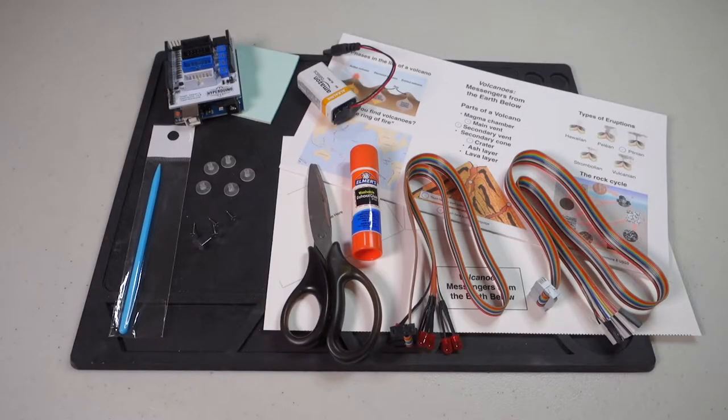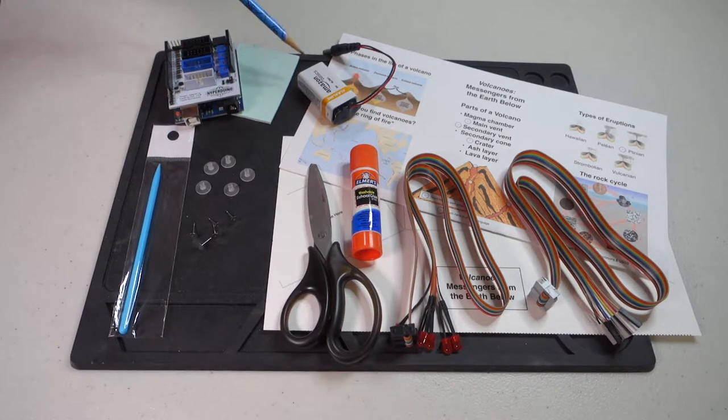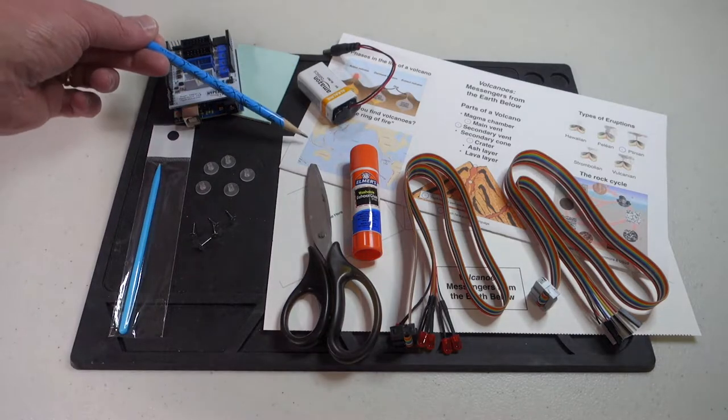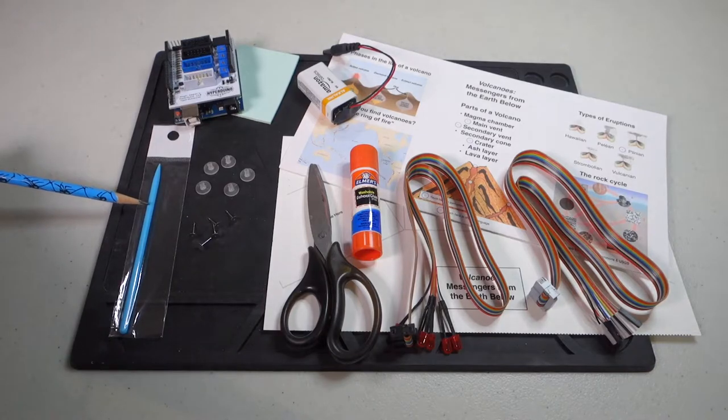To assemble the kit you'll need the following items. The Hyperduino with the foam backing, a 9 volt battery, the Volcano kit itself which is two pieces of cardstock, the blue hole making tool,